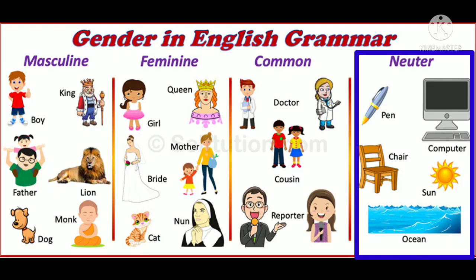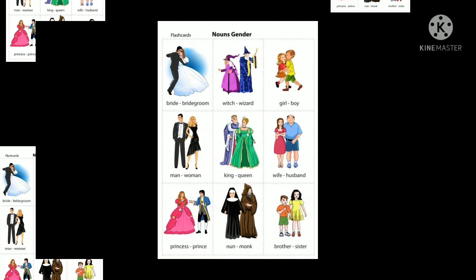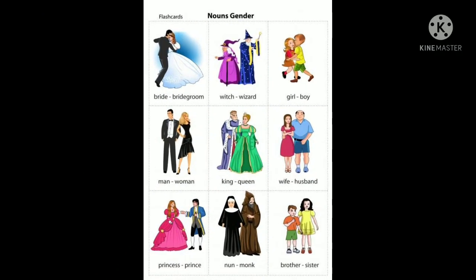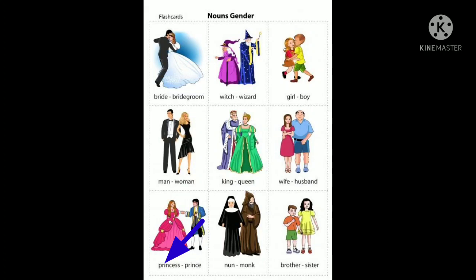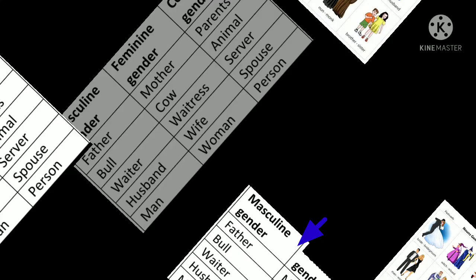More examples: bride and bridegroom, witch and wizard, girl and boy, man and woman, king and queen, wife and husband, princess and prince, nun and monk, brother and sister.